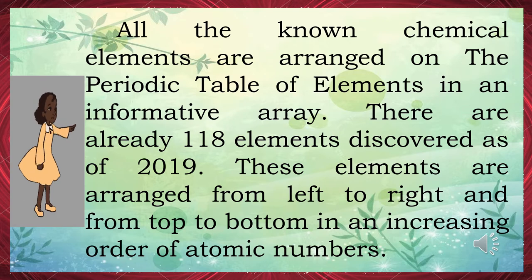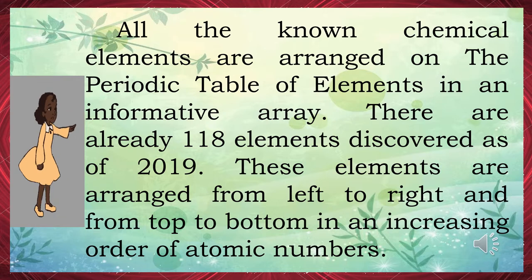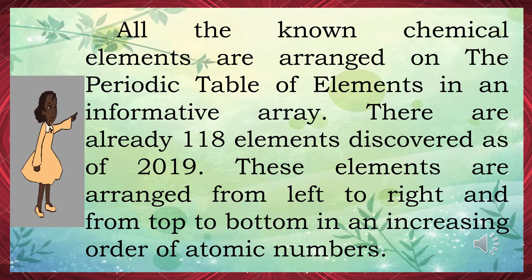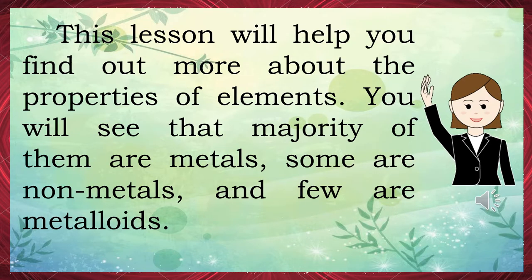All the known chemical elements are arranged on the periodic table of elements in an informative array. There are already 118 elements discovered as of 2019. These elements are arranged from left to right and from top to bottom in an increasing order of atomic numbers. This lesson will help you find out more about the properties of elements — majority of them are metals, some are non-metals, and few are metalloids.